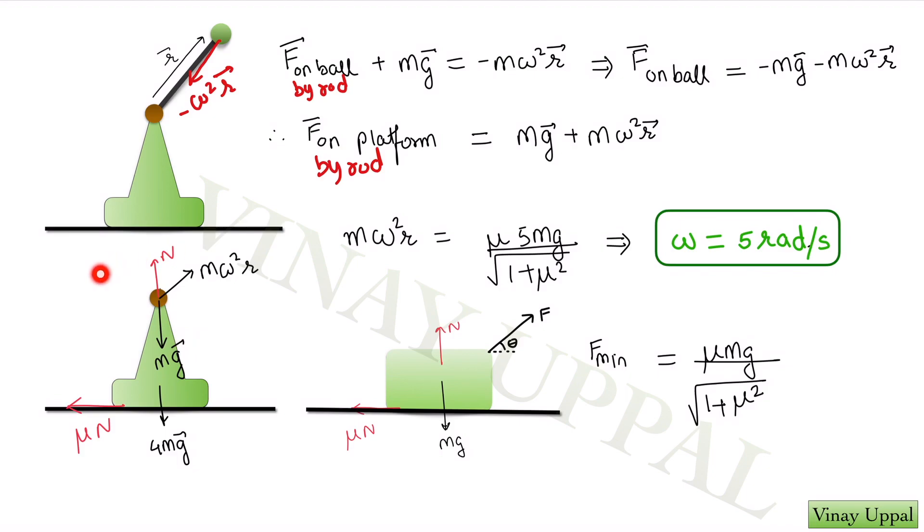Now if you compare this FBD to the one that we saw on the previous slide, can you see that normal force mu n is the same and m omega square r instead of that we have an external force F here. So m omega square r is playing the role of that external force trying to move the block and instead of simply mg, I have a net downward force of 5 mg. So we saw that the minimum force to make the block slide was mu mg by root of 1 plus mu squared.